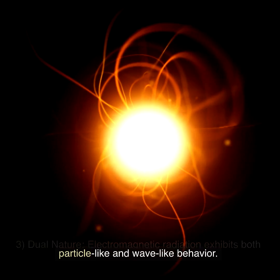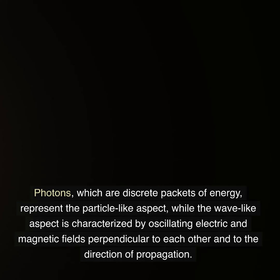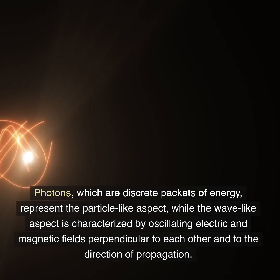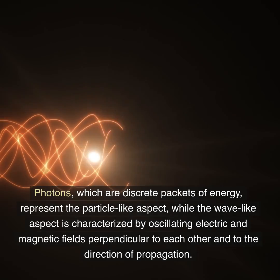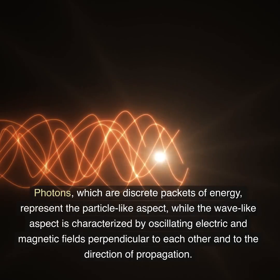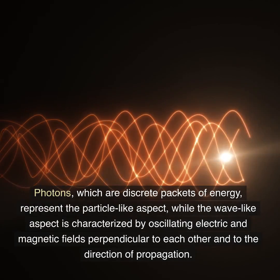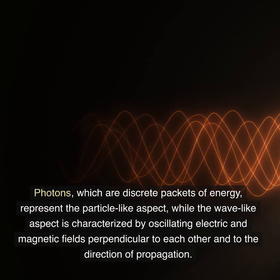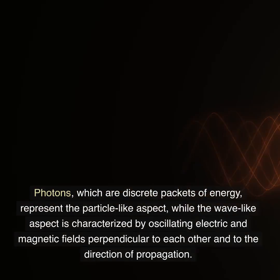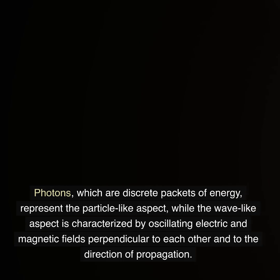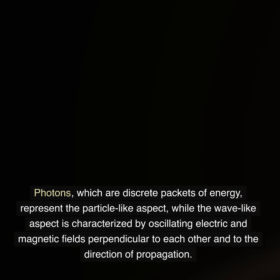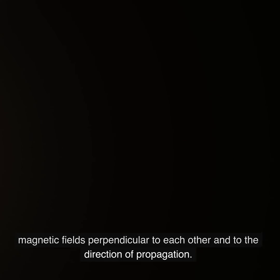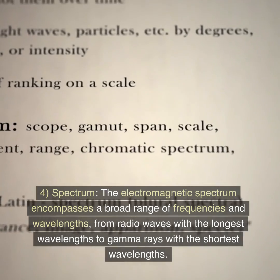Three: dual nature. Electromagnetic radiation exhibits both particle-like and wave-like behavior. Photons, which are discrete packets of energy, represent the particle-like aspect, while the wave-like aspect is characterized by oscillating electric and magnetic fields perpendicular to each other and to the direction of propagation.